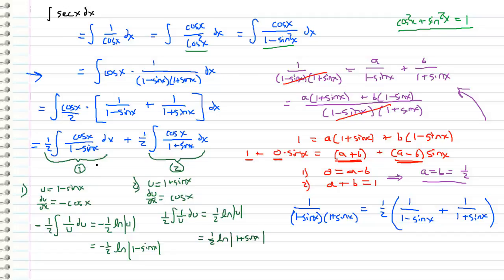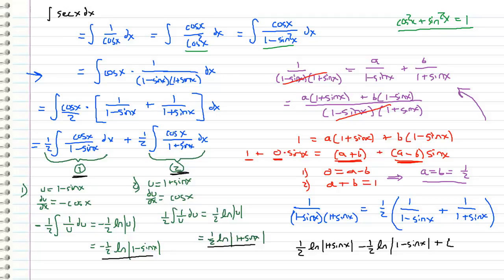For our final answer, all we have to do is take the first part and add it to the second part. So we get 1/2 times the natural log of (1 plus sine x), minus 1/2 times the natural log of (1 minus sine x), plus our constant of integration. This is our answer, but if we know anything about logarithms, we can express this in a more convenient form.